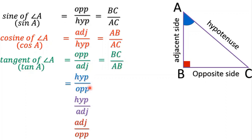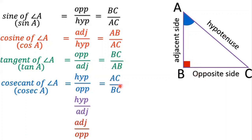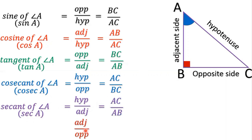The remaining ratios are the reciprocals. The ratio hypotenuse by opposite is called cosecant of angle A. The ratio hypotenuse by adjacent is called secant of angle A, short form sec A; hypotenuse is AC and adjacent side is AB, so sec A equals AC by AB. The ratio adjacent by opposite is called cotangent of angle A, short form cot A, that is AB by BC.